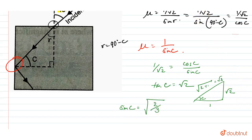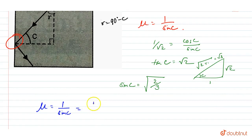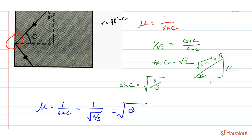Now we know that the refractive index mu equals 1 upon sine C. That means mu equals 1 upon the value of sine C that we have found out. So our refractive index is the square root of 3 upon 2.